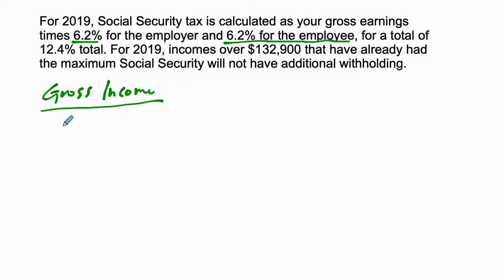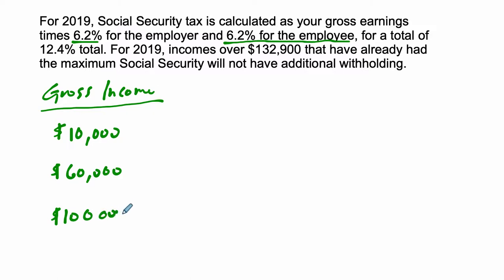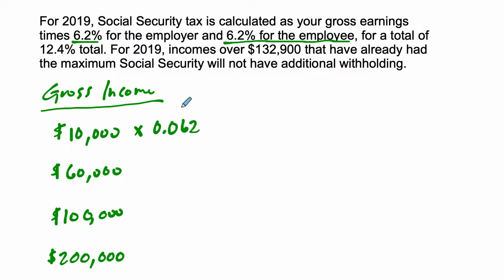So if we look at a couple of gross incomes: a smaller income of $10,000, a nice round number, then $60,000, $100,000, and finally $200,000, so you can see how the cap works for the higher salary. For the gross income of $10,000, if I want to know what I'm paying in Social Security, I just multiply it by 0.062. That number 0.062 is just 6.2 divided by 100 — you have a percent, you want to turn it into a decimal, divide by 100.